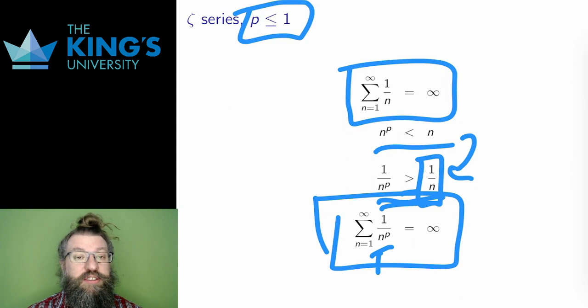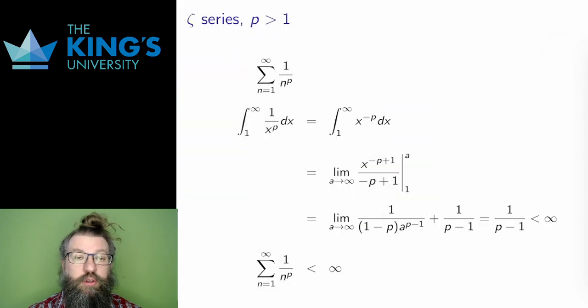Well, that covers all p less than 1. All of those will diverge. What about p greater than 1? The condition says this converges, but why? Well, here I can use the integral test.